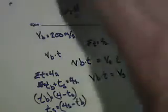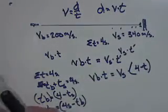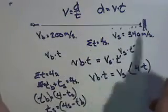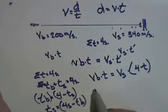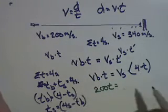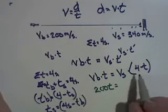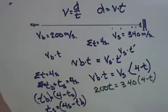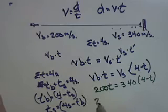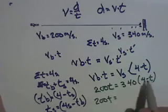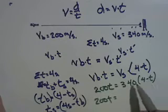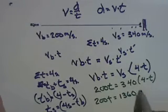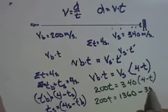At this point I can substitute in some values and get hard numbers to work with. I'm going to get rid of units. I know I'll end up with seconds for time and meters for distance. So 200t equals 340 times 4 minus t. That gives us 200t equals 340 times 4, which is 1360, minus 340t.